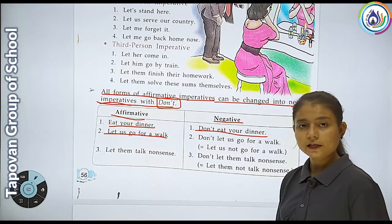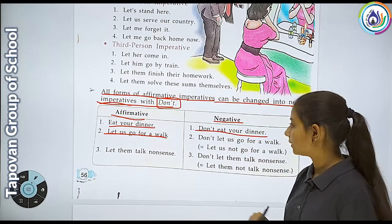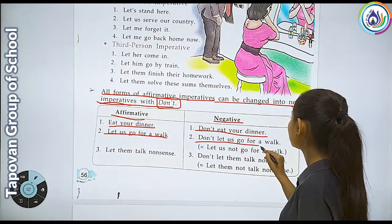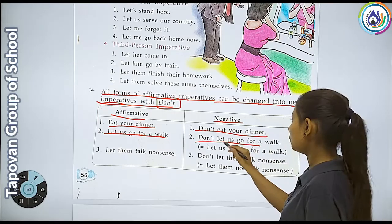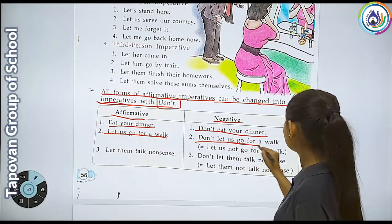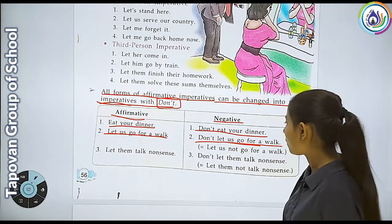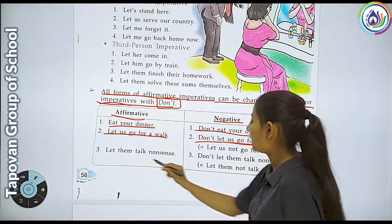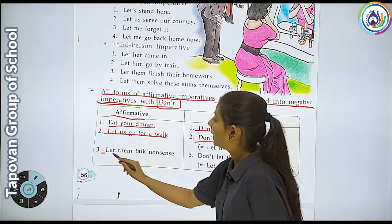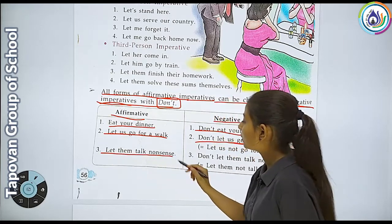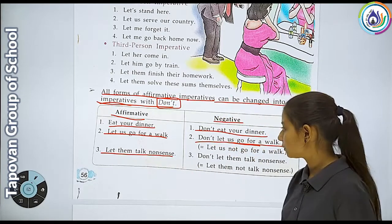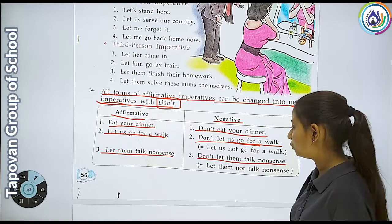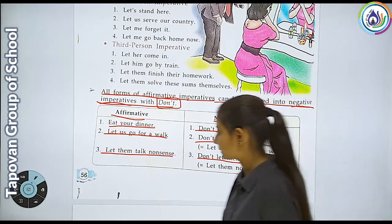'Let us go for a walk' - walk ke liye jaane do becomes 'Don't let us go for a walk'. Similarly, 'Let them talk nonsense' becomes 'Don't let them talk nonsense'.